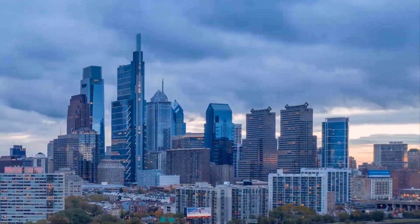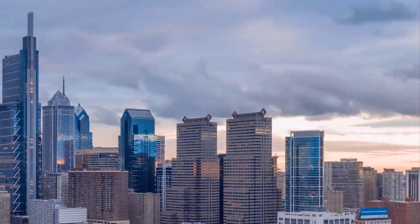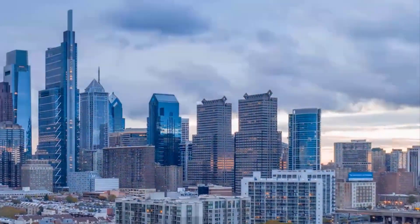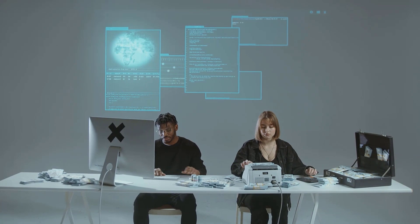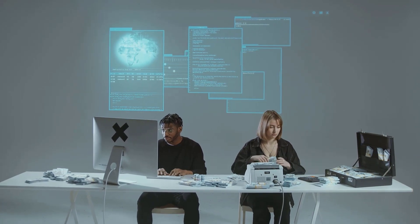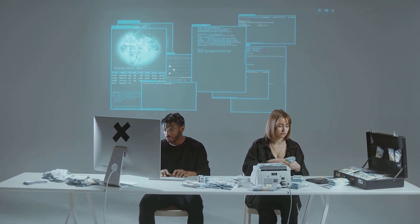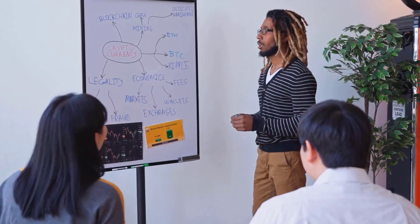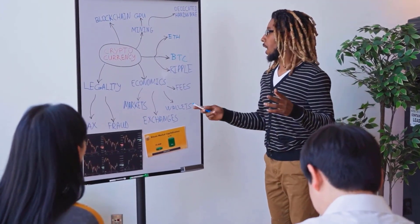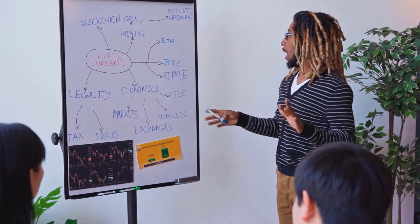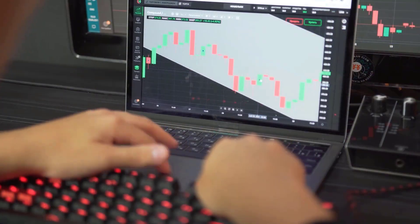WebPC estimate on Tuesday, August 8 — cost 65.29 Rans, high 69.86, low 60.72. In three weeks, WebPC cost forecast on Wednesday, August 9 — cost 64.05 Rans, high 68.53, low 59.57.